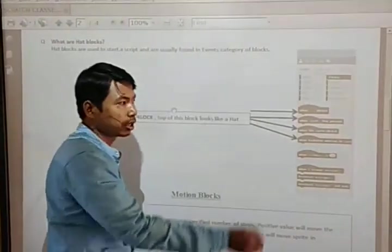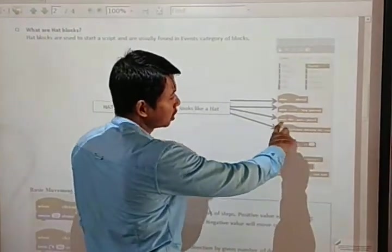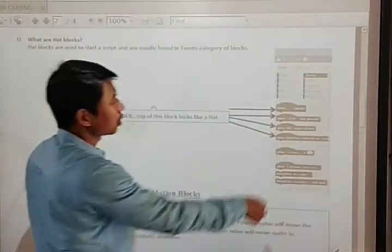And are usually found in events category blocks. So it is found in events block. Here as you can see when flag is clicked, when space bar key pressed. So here are some examples of hat blocks.